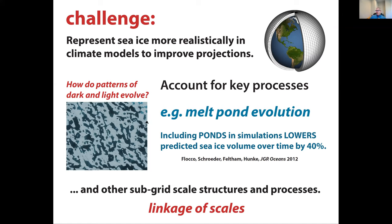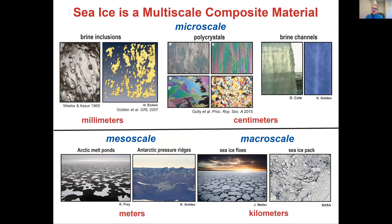In particular, how do you account for key processes such as melt ponds—beautiful geometrical structures that form as sea ice melts, but only in the Arctic. How do you incorporate these important ponds, which really affect long-term simulations by accounting for how much energy is absorbed by the ice? These features are far smaller than coarse-grained climate models, presenting a fundamental homogenization problem: how do you upscale these fine features and their impact on much larger scales?